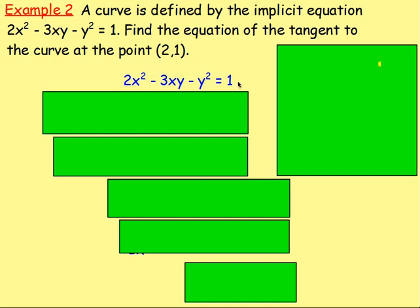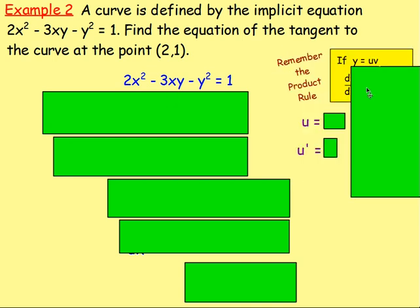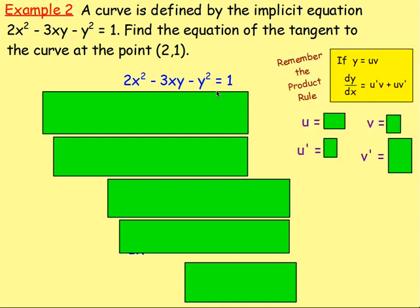You could just go straight into differentiation — we don't have to rearrange it. We're just going to use our implicit differentiation. Differentiating the 2X squared, that's dead easy. Differentiating the Y squared, again, dead easy. But here we've got a 3XY. How would we differentiate that? We would have to use the product rule, because we've got one function times another function — it's a product of two functions.